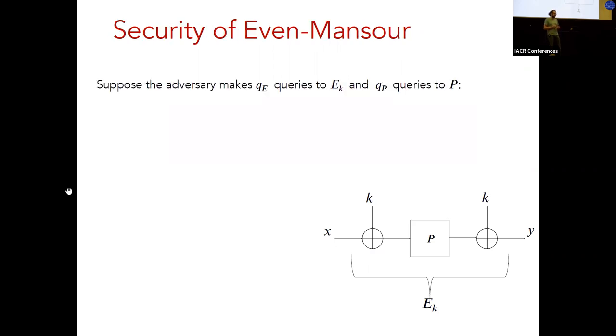How about security? As a reminder, the permutation is considered ideal, so an attacker needs to make queries to this permutation, and an attacker is also allowed queries to the cipher. And the right security notion for such a block cipher is that of a pseudorandom permutation. So the task of an attacker is to distinguish the cipher from a random permutation. Now let's look at an adversary that makes QE queries to the cipher and QP queries to the permutation. In the classical setting, it is this result that has been known for a long time that the product of the queries to the permutation and the cipher needs to be two to the N or of the order two to the N to achieve a constant distinguishing advantage.